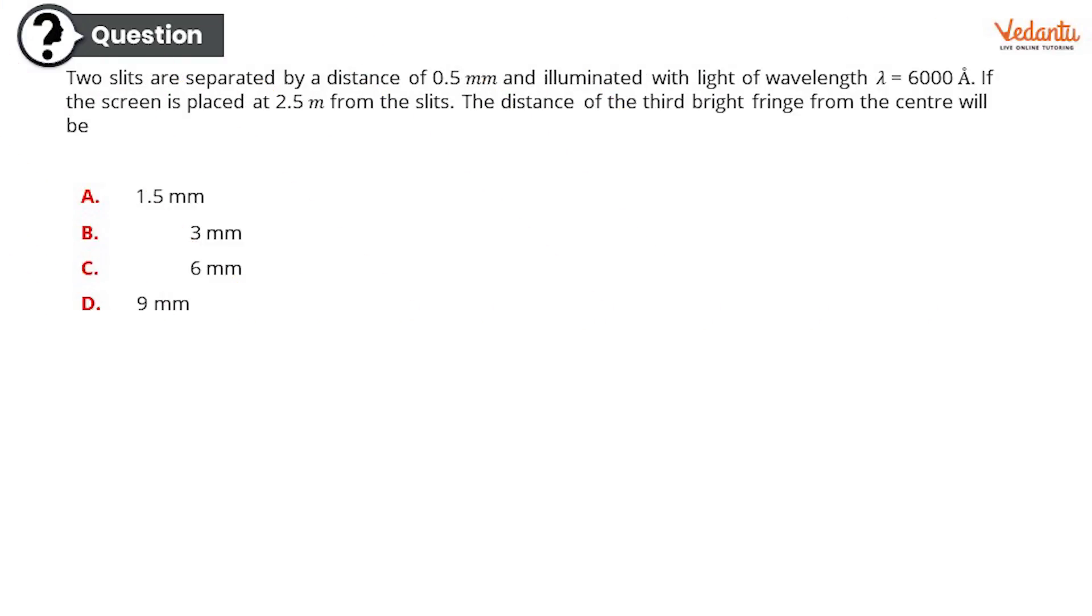Another interesting question: two slits are separated by a distance of 0.5 mm and illuminated with light of wavelength λ = 6000 angstroms. If the screen is placed at 2.5 meters from the slits, the distance of the third bright fringe from the center will be—remember, the third bright fringe, so make sure that you're using the right formula. Option A: 1.5 mm. Option B: 3 mm. Option C: 6 mm. Or option D: 9 mm.